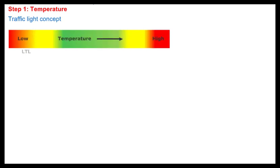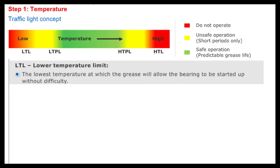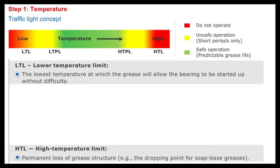SKF has developed this traffic light concept to illustrate the behaviour of grease throughout the temperature range. The extreme temperature limits, low and high, are well defined. The low temperature limit, LTL, the lowest temperature limit at which a grease enables the bearing to be started up without difficulty, is largely determined by the base oil and its viscosity. The high temperature limit, the HTL, is determined by the type of thickener and its dropping point. The dropping point is the temperature at which a grease loses its consistency and becomes fluid.